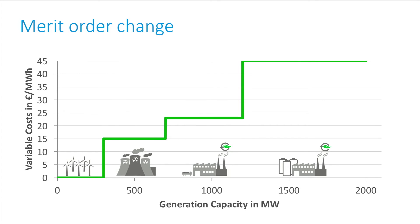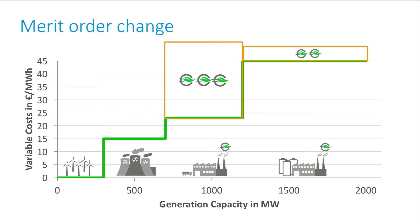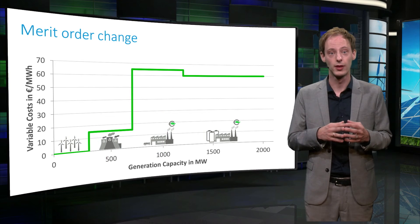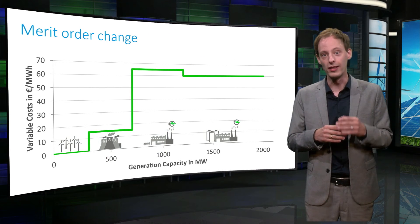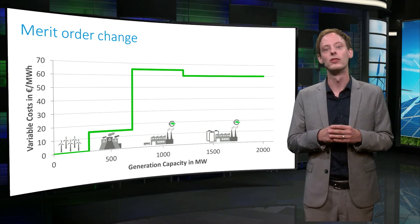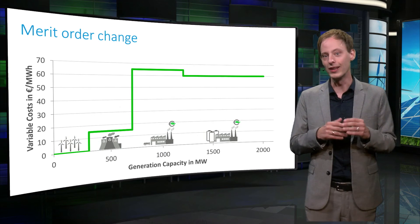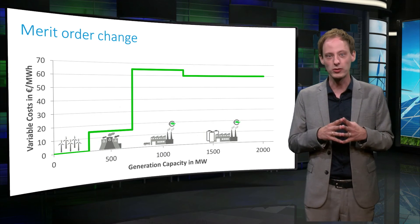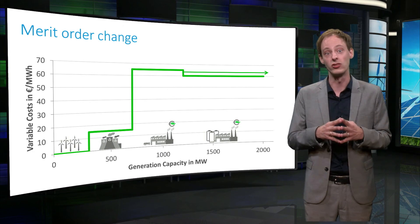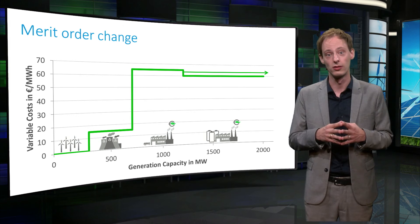When the carbon price increases, at some point electricity from natural gas will be cheaper than coal, because coal emits more CO2 per megawatt hour produced. In this example, a carbon price of at least 60 EUR per tonne would be needed to achieve this change in the merit order.